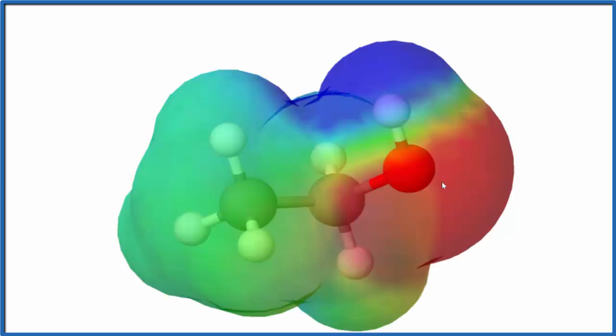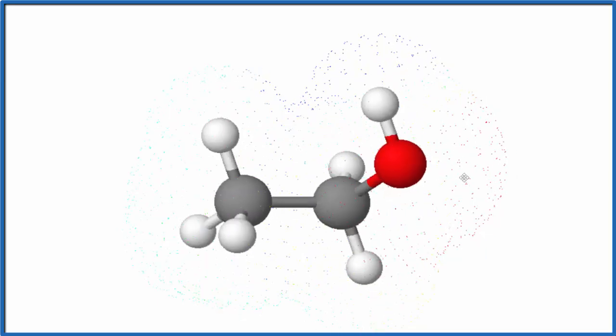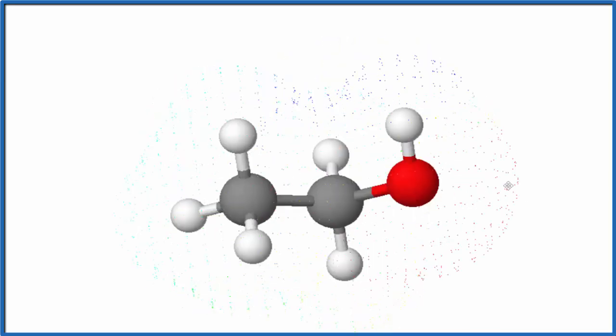We know that oxygen is a more electronegative atom. So the electrons in these bonds here spend more time with the oxygen atom. That makes it more negative. So that red area is more negative.